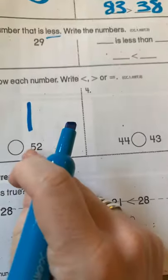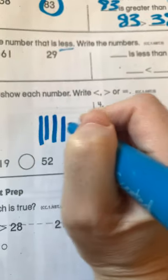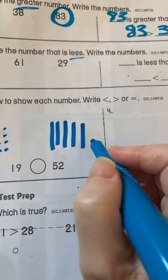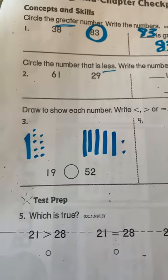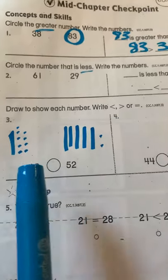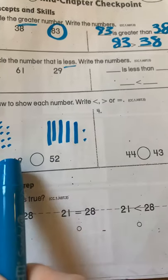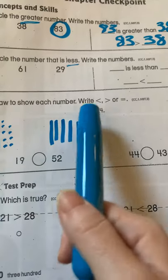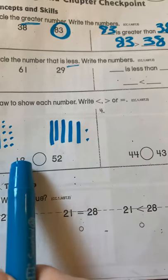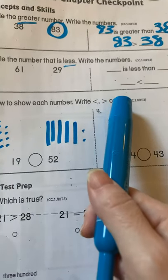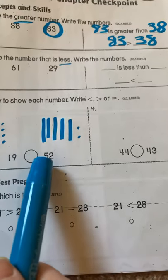52. Five ten sticks, because five is in the tens column. One, two, three, four, five, and two ones. One, two. So is 19 less than? Is 19 greater? 19 equal? 52.